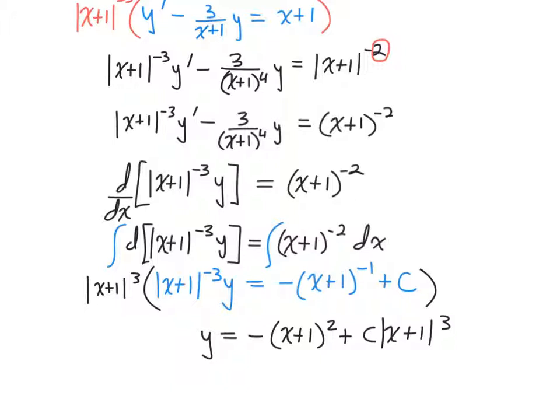About the integration of x plus 1 to the negative second power, if inside parentheses was 2x plus 1, you wouldn't be able to do the power rule, right? You would, but you'd have to divide by 2. Okay. So you divide by a derivative on the inside as long as it's a constant. Otherwise, you have to use substitution.